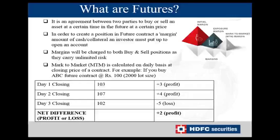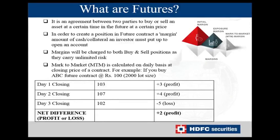To create a position in futures, you require a margin amount, which can be in cash or collateral stocks that an investor must put up to open an account and start trading. If you do not have cash but have stocks in your portfolio, you can keep them as collateral. Margins are charged to both buyers and sellers. The first initial margin is computed on a SPAN margin — Standard Portfolio Analysis of Risk. Any margin charged above the SPAN margin is known as the exposure margin. The third important kind is the mark-to-market margin, also known as M2M.